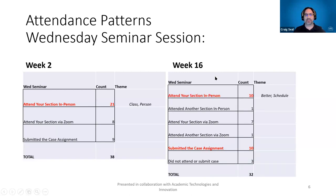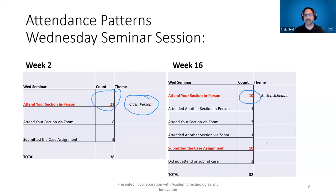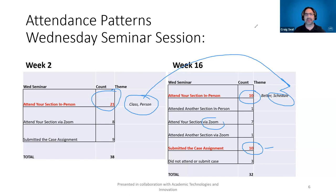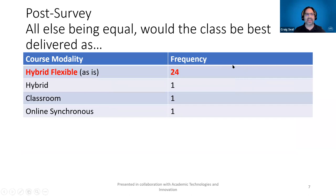On Wednesday — the activity day where attending earns credit and non-attenders do a separate assignment — at the start, the majority came in person and reflected that being in person was important. At the end, a group still attended in person, but an equal group opted for the separate paper, some attended via Zoom, and some actually switched sections. The theme changed from valuing in-person connection to prioritizing scheduling and convenience.